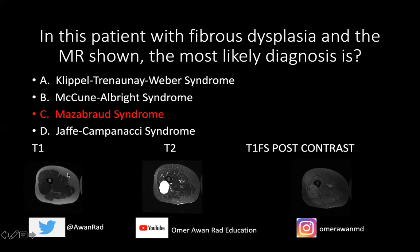Anytime you have a lesion that's T1 dark, T2 bright, and has enhancement, your differential should really be some sort of sarcoma, nerve sheath tumor, or intramuscular myxoma.